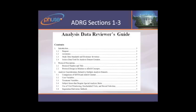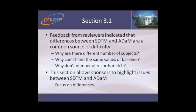The next section I wanted to highlight is the comparison of SDTM to ADAM content. From the feedback we heard from reviewers, a common source of difficulty is when there are differences between SDTM and ADAM. For example: why don't I have the same number of subjects in ADSL that I have in DM? Why are my baseline values different? How come I don't have the same number of records in vital signs SDTM and ADAM? This section is a place to highlight those differences that might trip up a reviewer trying to do analysis from the SDTM.